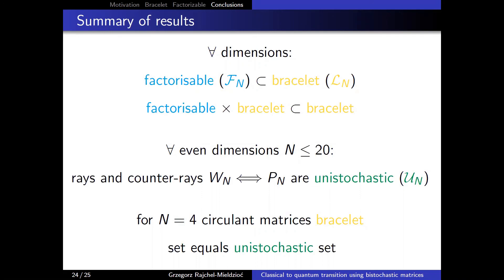Let me summarize the results from the last four years across two papers. For all dimensions, we have shown that factorizable matrices are a subset of bracelet matrices, and that the bracelet set is closed under multiplication by factorizable matrices. We proved that all lines connecting the flat matrix to any permutation matrix are unistochastic — but only for certain dimensions. We also proved that for N equals 4, all circulant matrices that are bracelets are also unistochastic.